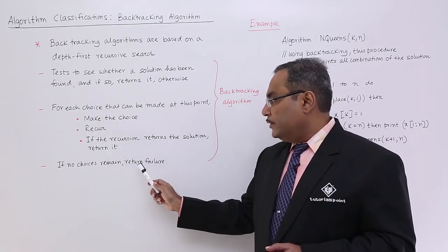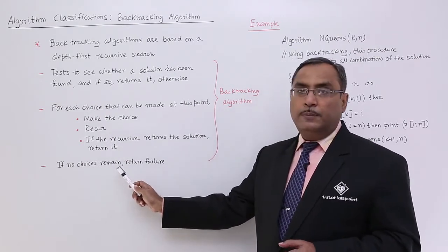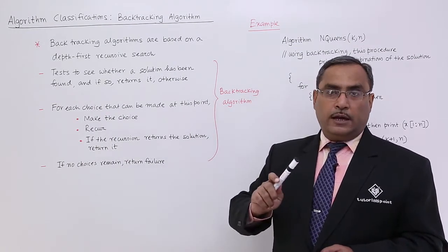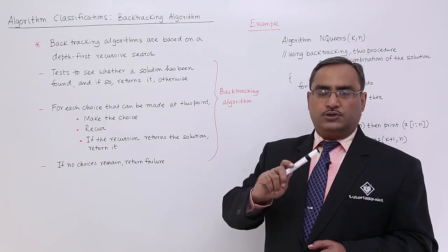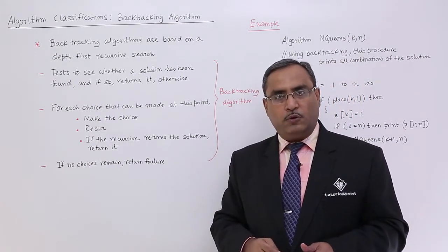If no choices remain, return failure, and that is when the choices are not available. Then it will backtrack and it will go for the other choices if possible in the previous recursive call.